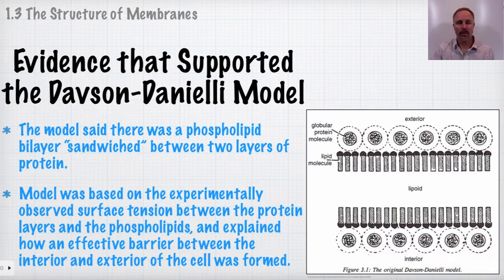So now some of the evidence that supports the Davson-Danielli model. So what the Davson-Danielli model originally said was that the bilayer consisted of this lipid component right here where the lipids are aligned and then kind of sandwiched in between these two layers of proteins here. So the layers of protein almost act like the sandwich bread and then these lipids would be very similar to like whatever you're having for your sandwich, whether it's lunch meat or something like that. And what the evidence was originally based upon was the experimentally observed surface tension between the protein molecules and the layers of phospholipids. And what it did was it explained this barrier that occurred between the interior and the exterior. And it stood the test of time for a long time.